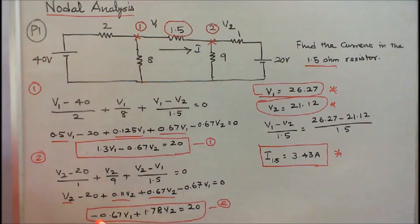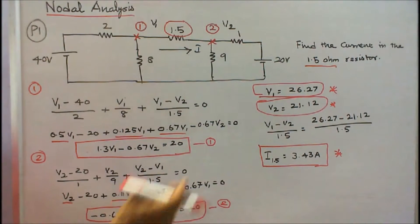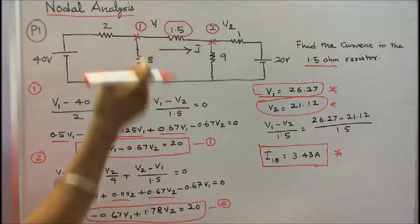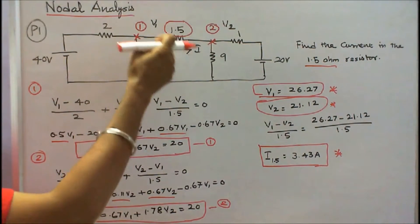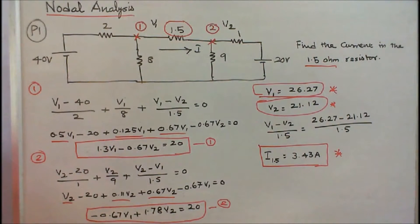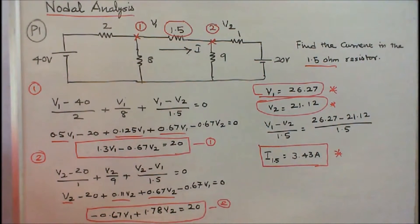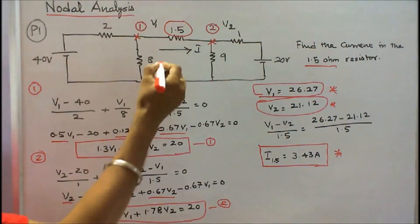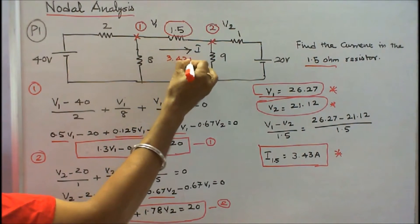With two equations and two variables, solving gives V1 equal to 26.27 and V2 equal to 21.12. Using these values, the current through the 1.5 ohm resistor is (V1 minus V2) divided by 1.5, which equals 3.43 amps. That is the answer.